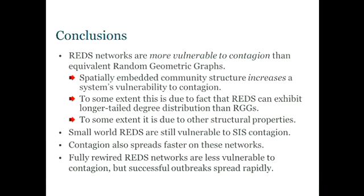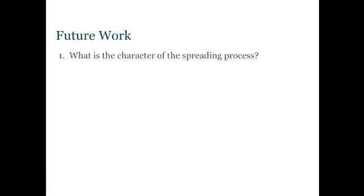So small world REDS are a kind of sweet spot where new information, for example, can establish itself in a population and can spread quickly, which is hard. It's hard to keep both of those things. So just to finish, I'm interested, at the moment we just looked at the end point of this spreading process. Does it fail or does it succeed? And how many individuals are infected when it stabilizes? But what does it look like as it's spreading across the network?